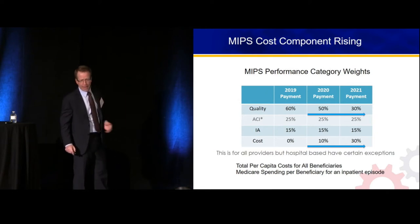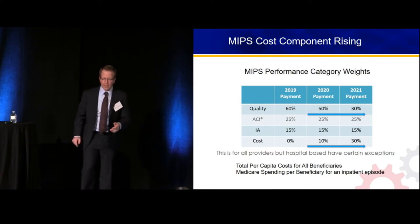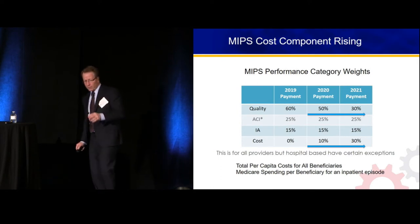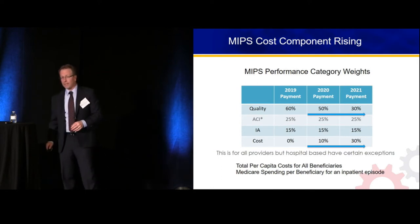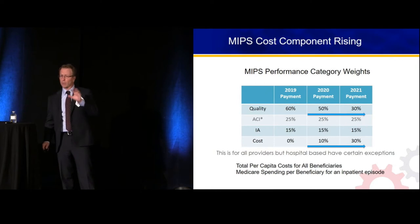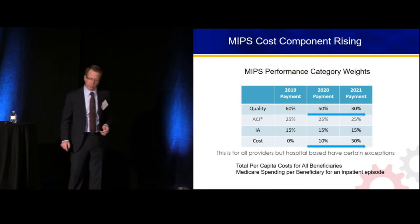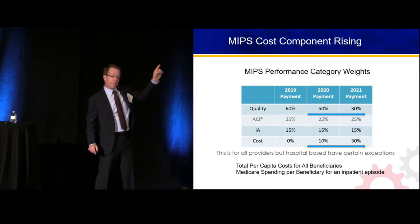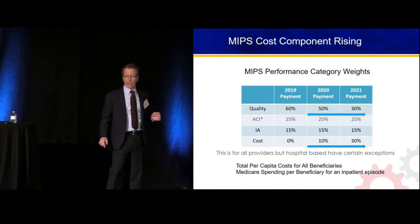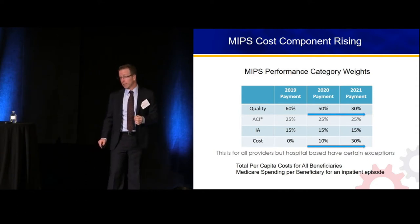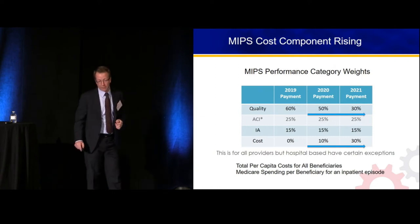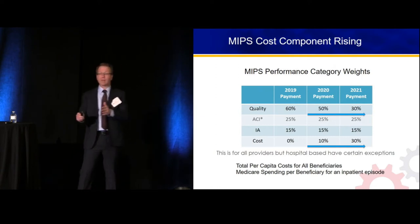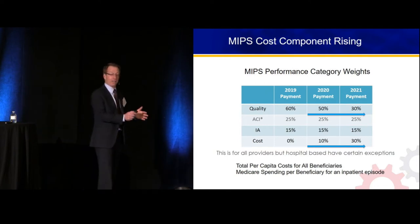We've got quality, which started at 60% the first year in the program, then down to 50, then down to 30. There are some adjustments if you're a hospital-based physician, because we are generally exempt from that middle category — advancing care information, which is the old meaningful use process. So in 2020, payments are based on 2018 actions.